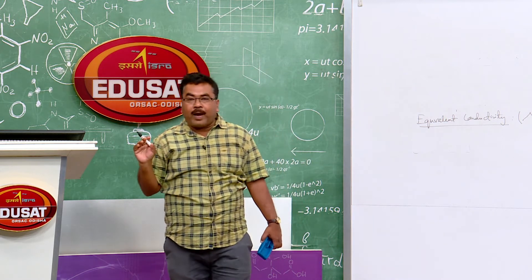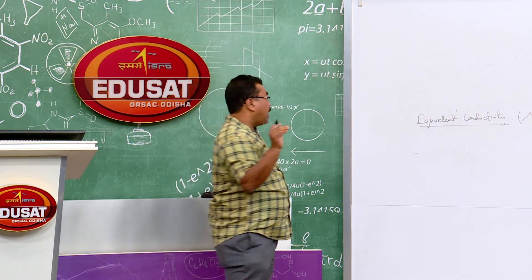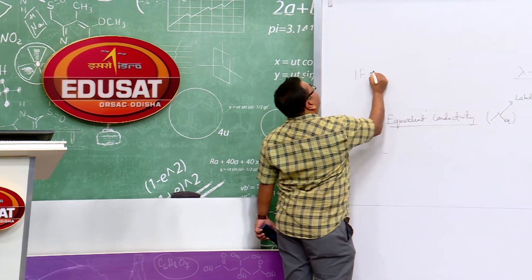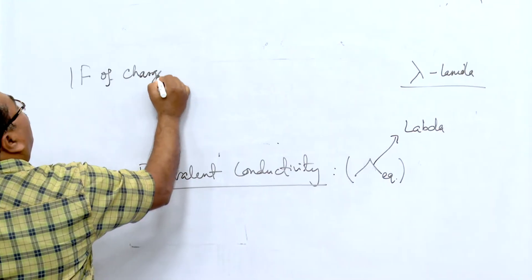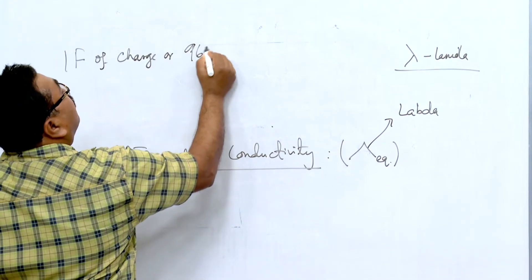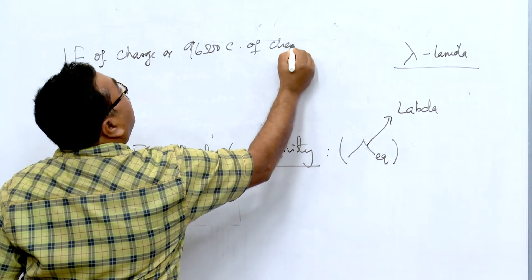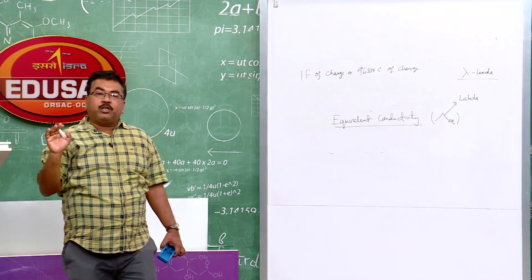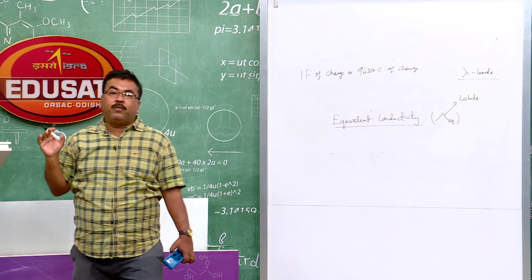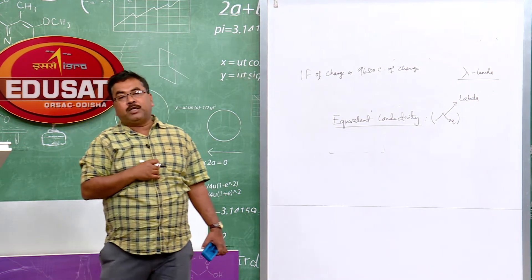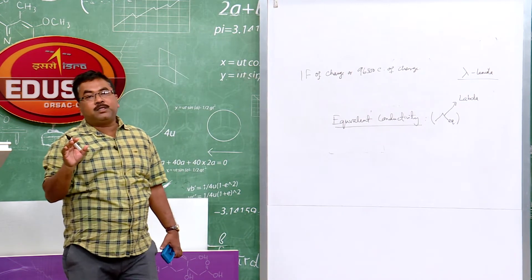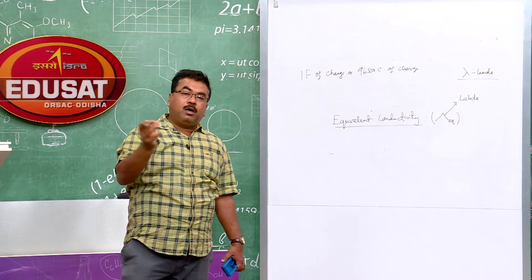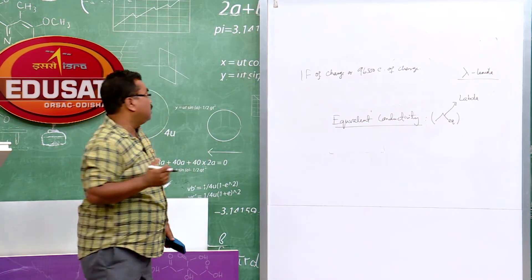From Faraday's laws, when one Faraday of charge — 96,500 coulombs — is passed through any electrolytic solution, it always produces one gram equivalent of substance at the electrodes. Irrespective of the nature of the electrolyte, one gram equivalent of electrolyte solution carries the same quantity of charge. Therefore, equivalent conductance is the more general way to express the conducting power of a solution.